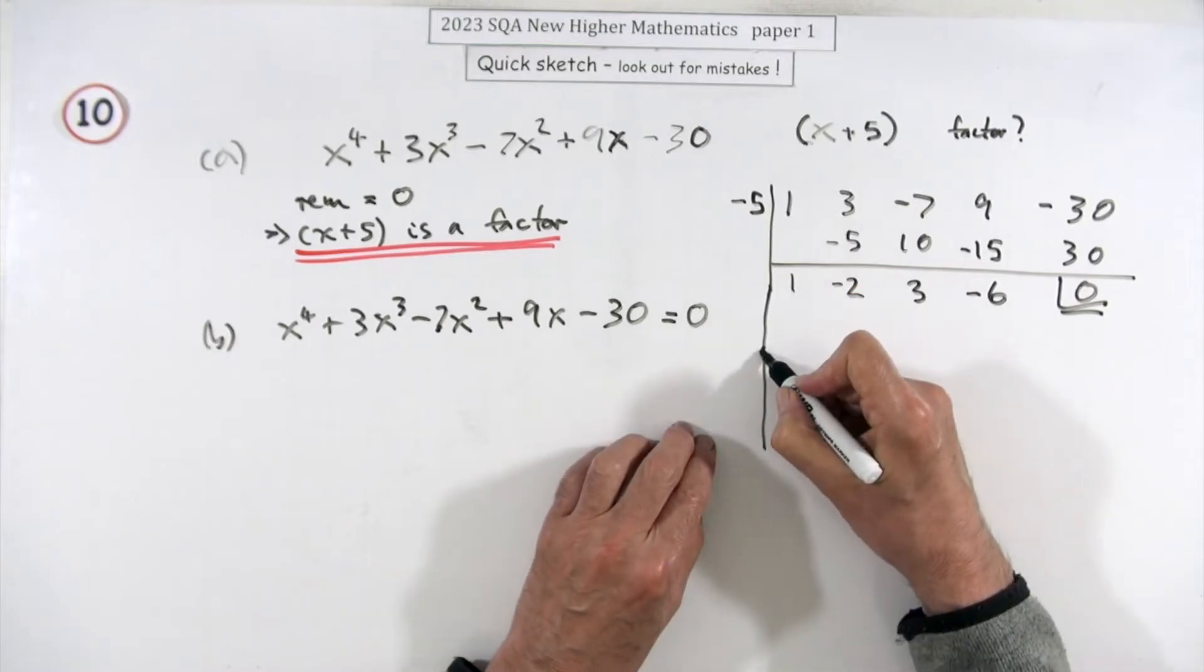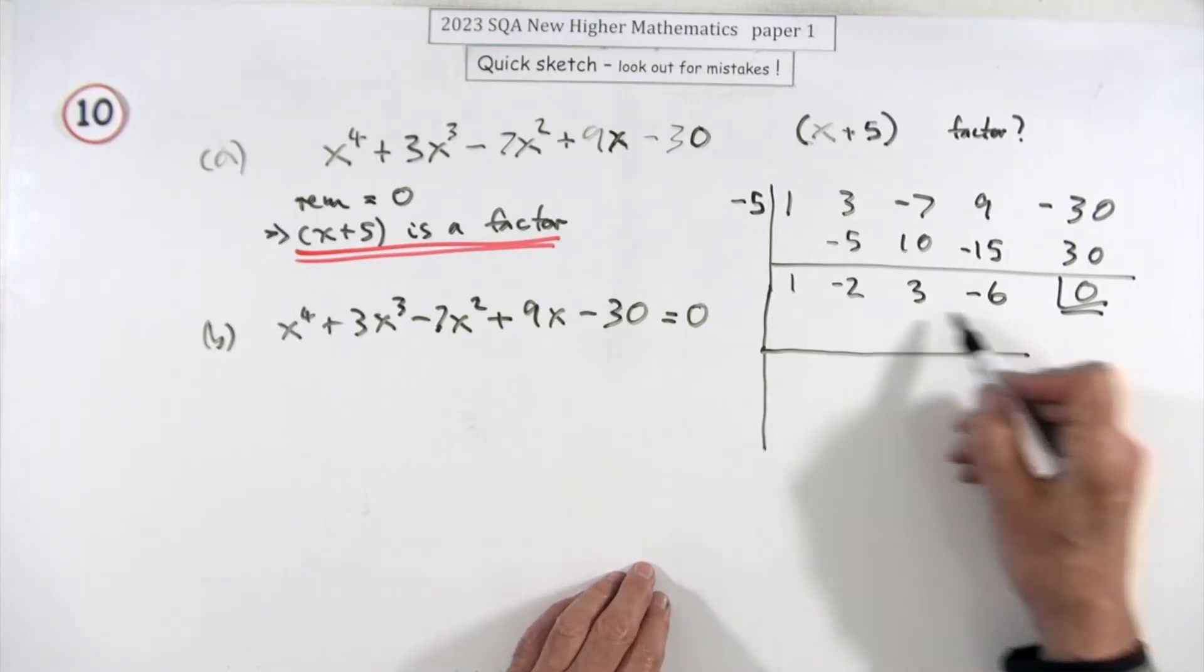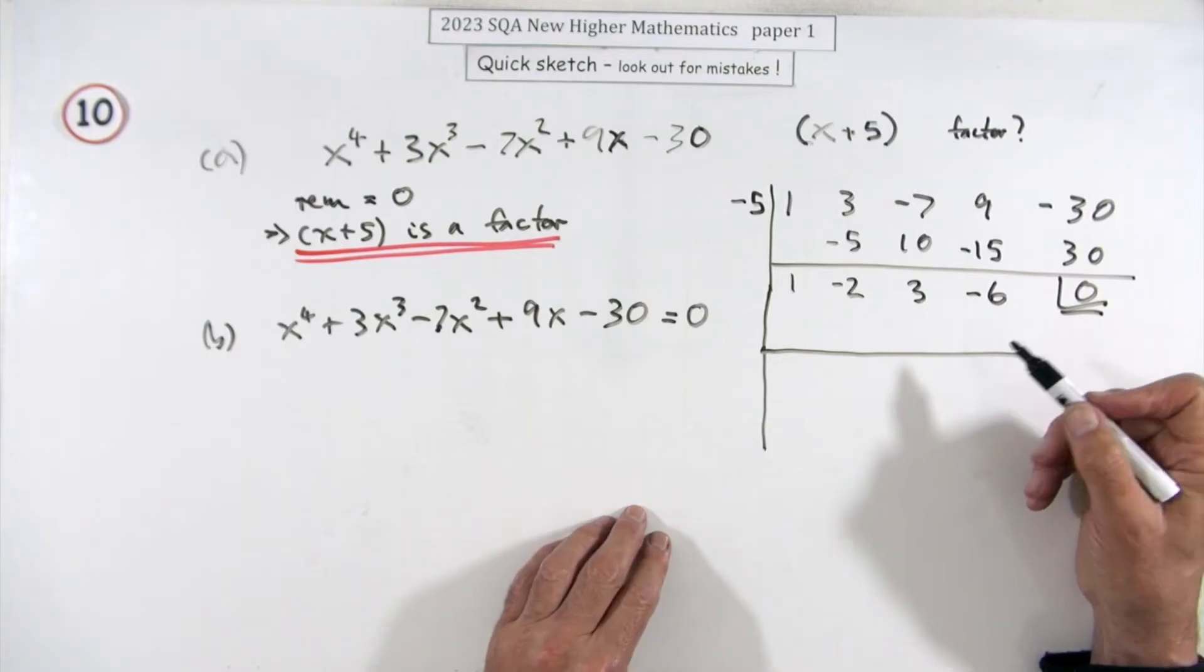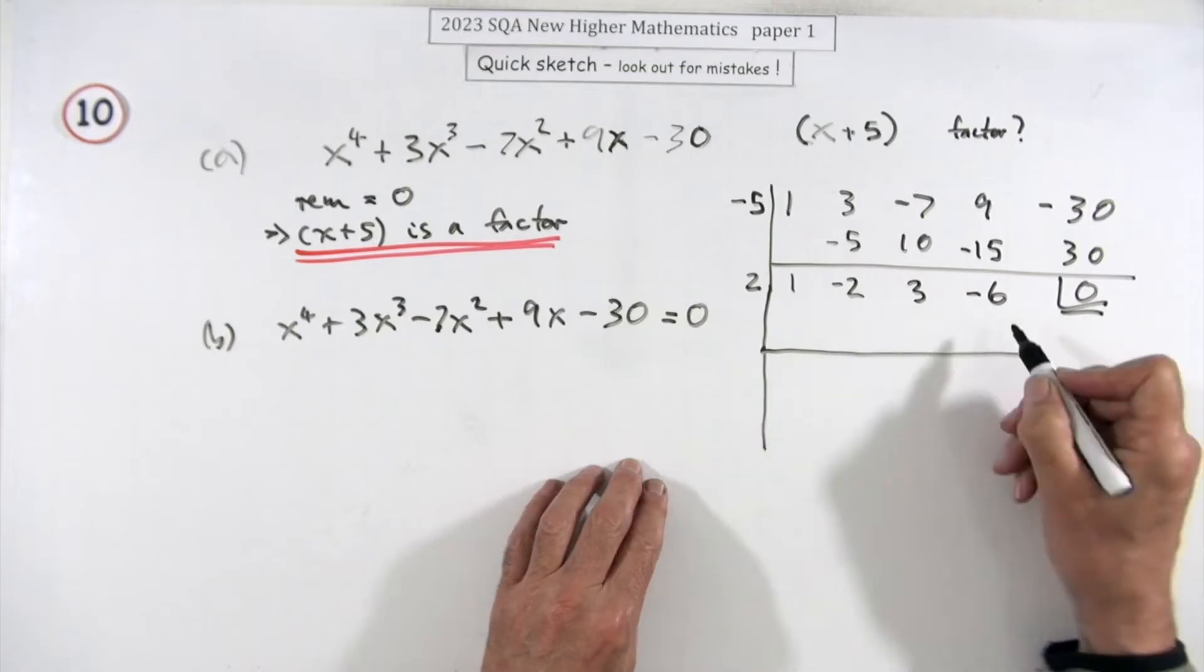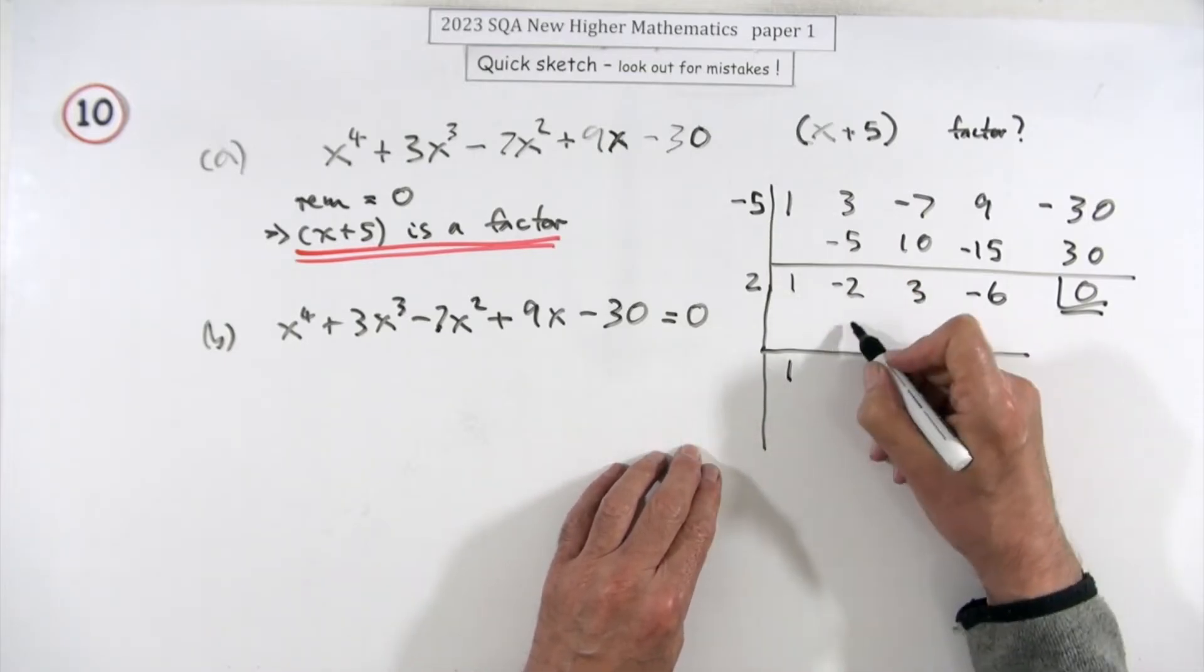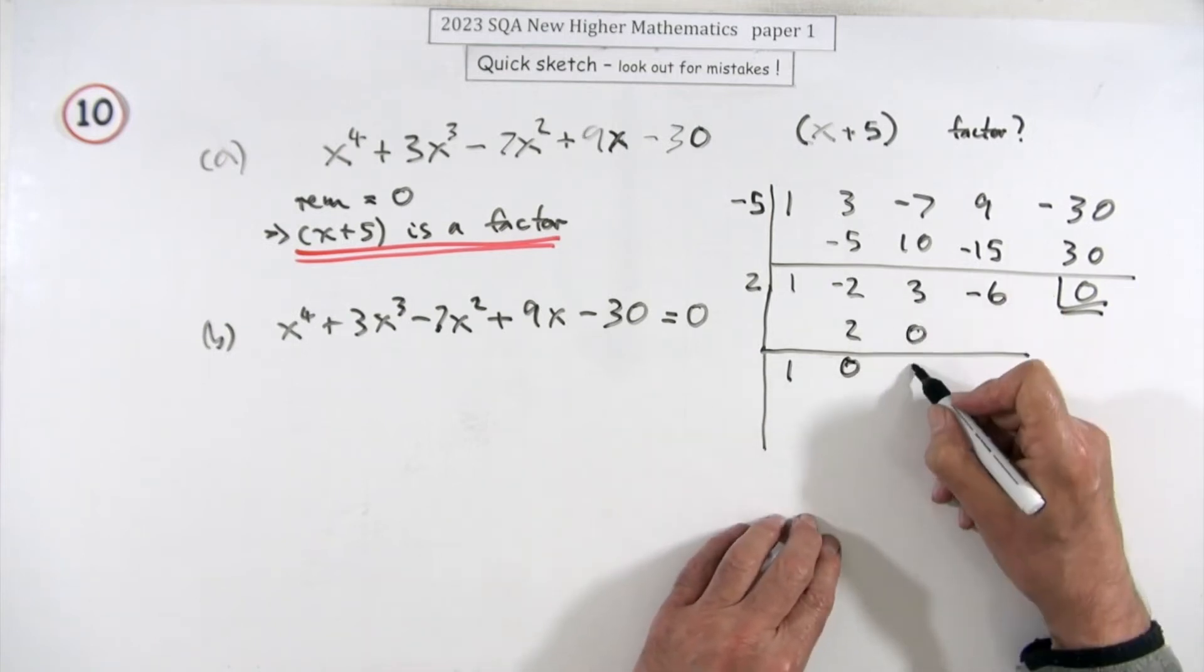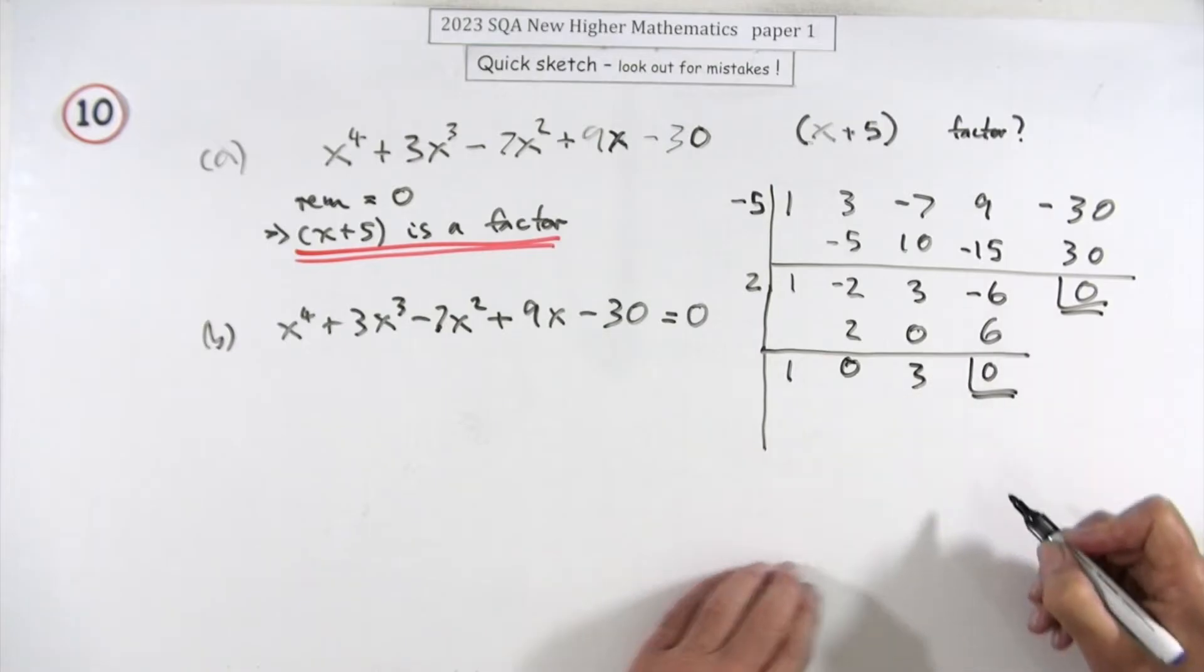Do the synthetic division again to find another number that goes in. This time the polynomial ends in a six, so you've got ones, twos, and threes. Try a two. Bring down one, multiply up to get two, then zero. That's handy because multiplying up gives zero. Then two threes are six, so that worked as well.